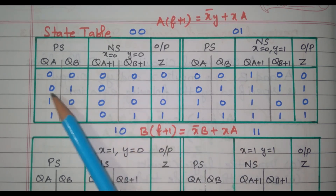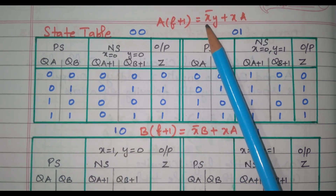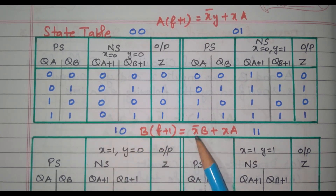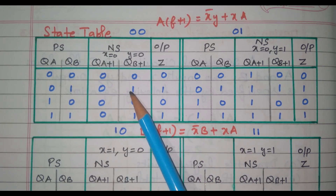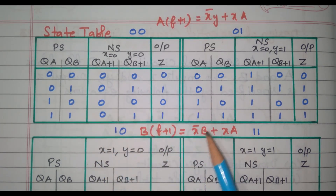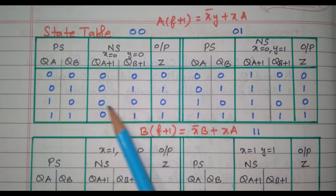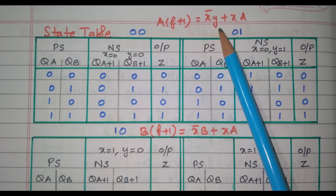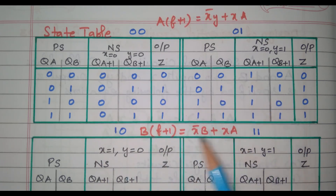Now we will go to the next combination: A=0, B=1, X=0, Y=0. For DA: X-bar is 1, Y is 0, so 1 into 0 = 0. X into A is 0 into 0 = 0. So A(t+1) = 0. For DB: X-bar is 1, B is 1, so 1 into 1 = 1. X into A is 0 into 0 = 0. So B(t+1) = 1 plus 0 = 1. Similarly for A=1 other terms 0: X is 0, so X into A = 0, and next state can be identified by substituting values into the equation.